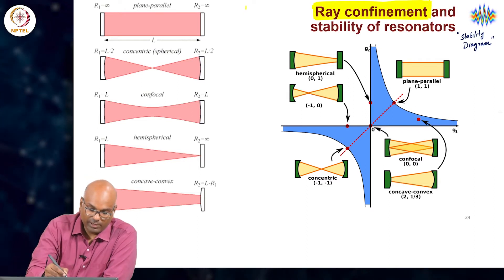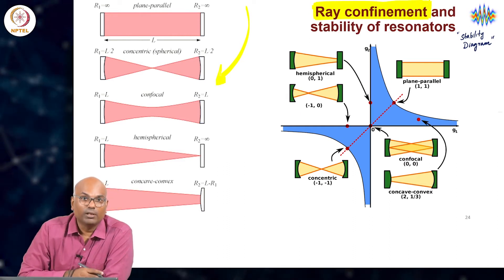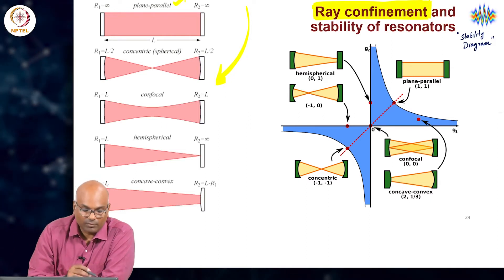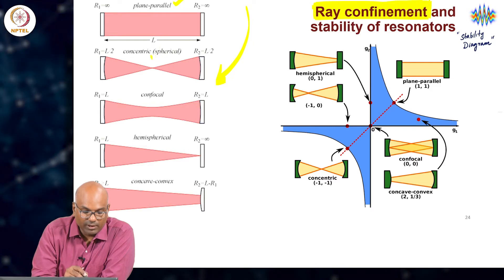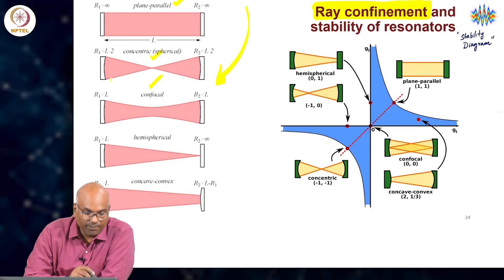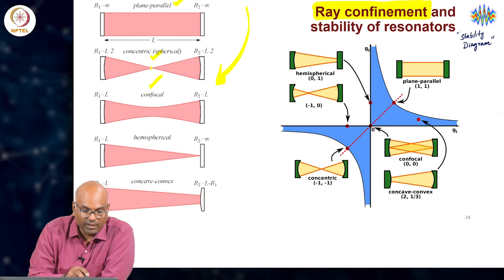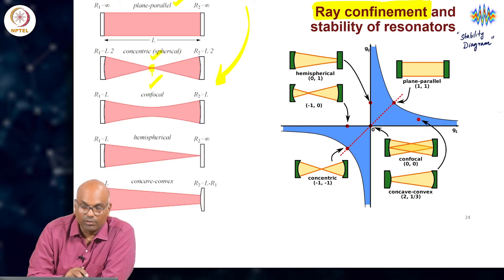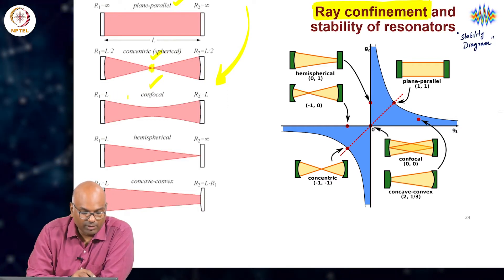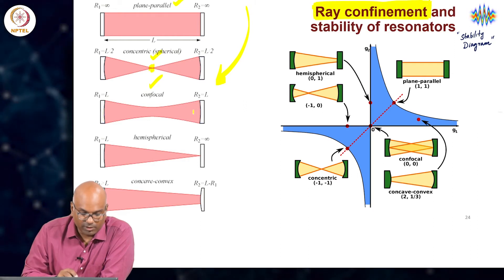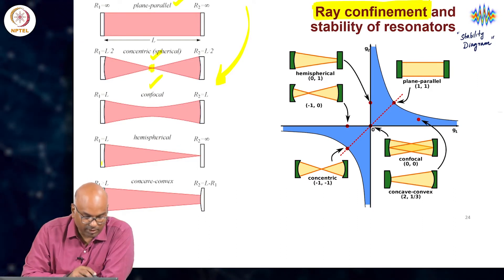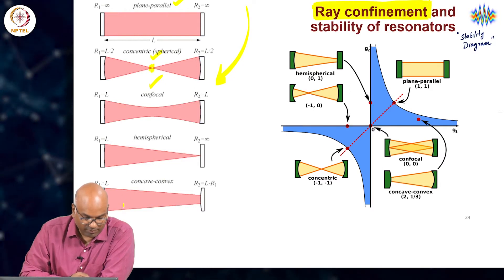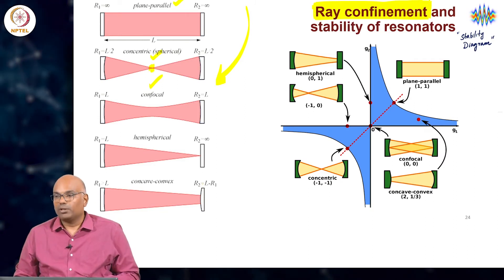Every resonator geometry — look to the left please on this viewgraph — every resonator geometry can be placed on the stability diagram. We consider all the way from cavities made of two plane mirrors to cavities made with spherical mirrors where you have a concentric geometry or a confocal geometry. The concentric geometry is one where the foci of the two identical mirrors meet in the middle of the cavity. One can also imagine a non-symmetric geometry, or a confocal geometry where the focus of each mirror lies on the surface of the other. You have a hemispherical cavity with one planar mirror and one curved mirror.